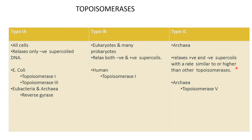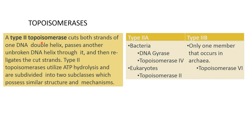Type 1C is seen in archaea and relaxes positive and negative supercoiling with a rate similar to or higher than other topoisomerases; an example is topoisomerase 5. Type 2 topoisomerases cut both strands of one DNA double helix, pass another unbroken DNA helix through it, and then religate the cut strand. Type 2 topoisomerases utilize ATP hydrolysis and are subdivided into Type 2A and Type 2B. Type 2A is seen in bacteria — examples are DNA gyrase and topoisomerase 4 — and in eukaryotes, it is topoisomerase 2. Type 2B has only one member, found in archaea, and topoisomerase 6 is the example.